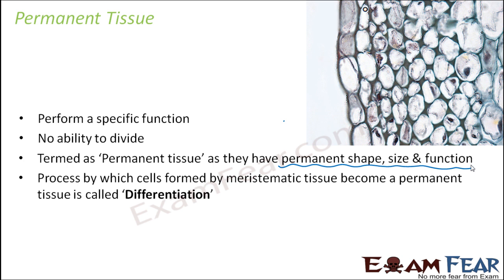The process by which cells formed by meristematic tissue become permanent tissue is called differentiation — this small concept is very important to understand. Meristematic tissues keep dividing to form new cells. Some of those cells remain meristematic, but some get specialized, lose their ability to divide, and perform a specific function. This process is known as differentiation, and the resulting cells are termed permanent tissue.